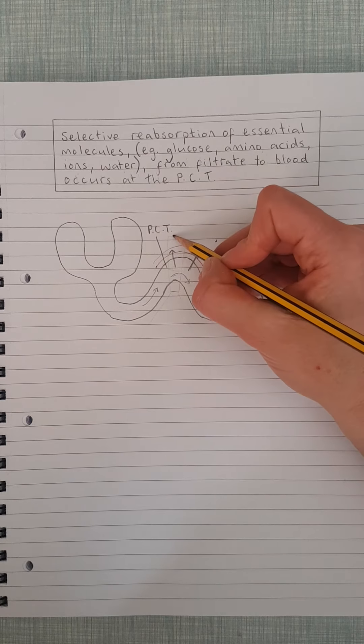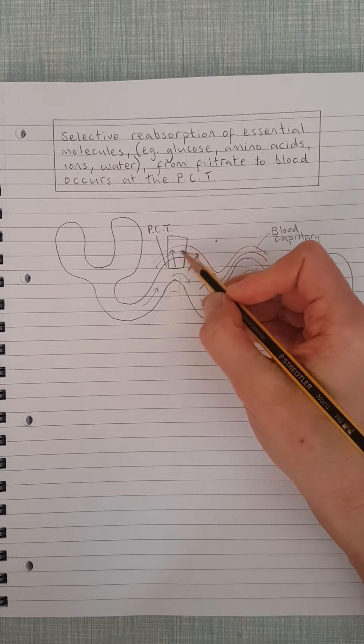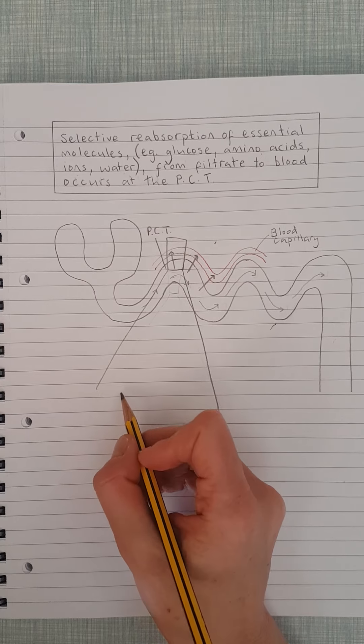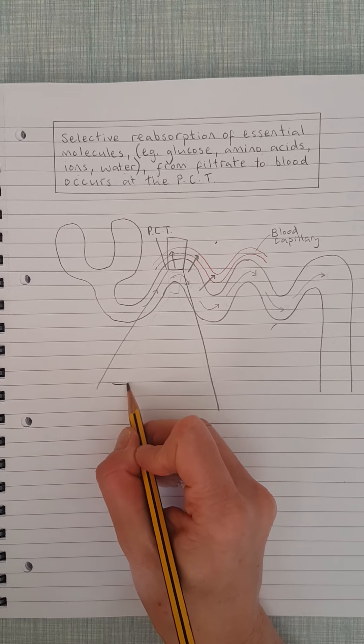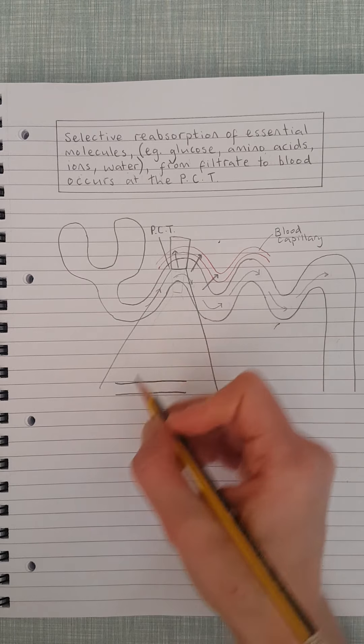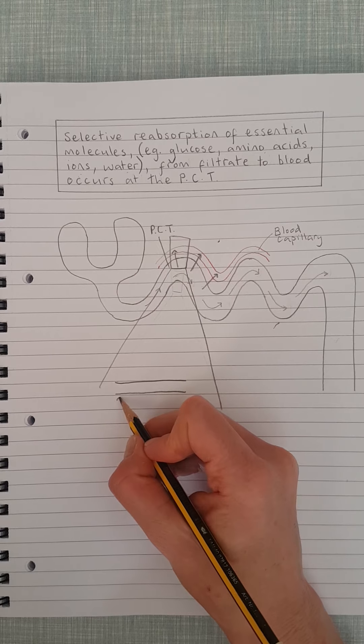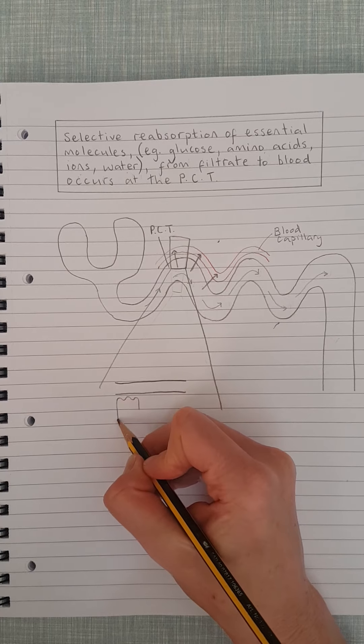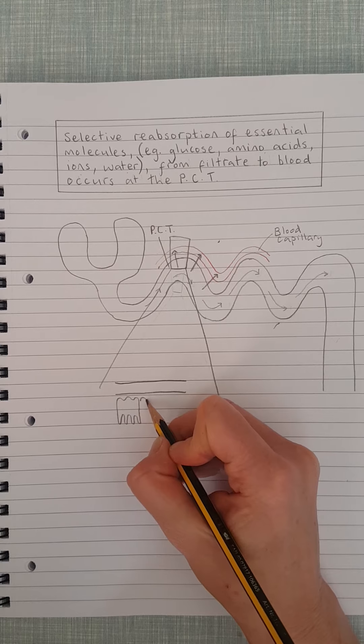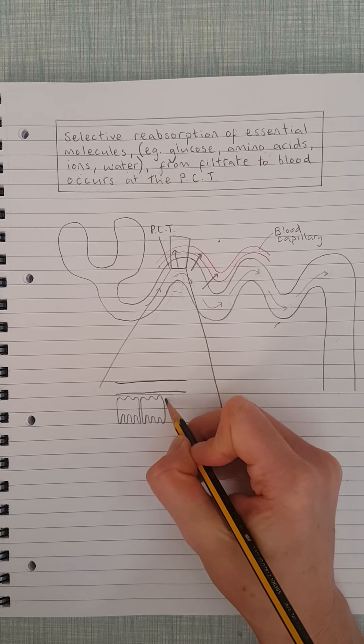So what I'll do is I'll just draw a little enlargement of this part of the PCT and the capillary, and we'll have a look at some of the adaptations that are happening. Here's the capillary, there we go. And here are the cells that make up the wall of the PCT, so what these folded membranes and some microvilli.